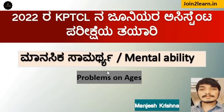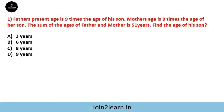Hello friends, welcome to join to learn. Problems on ages: father's present age is nine times the age of his son, mother's age is eight times the age of her son, the sum of the ages of father and mother is 51 years. Find the age of his son.